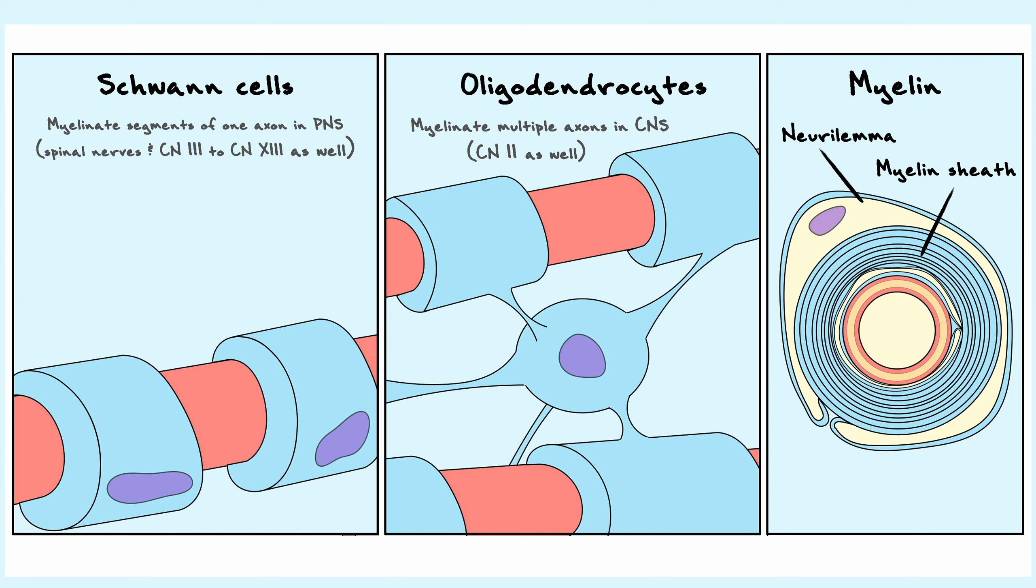Two very important proteins involved in holding myelin together are the myelin basic protein and the proteolipid protein.